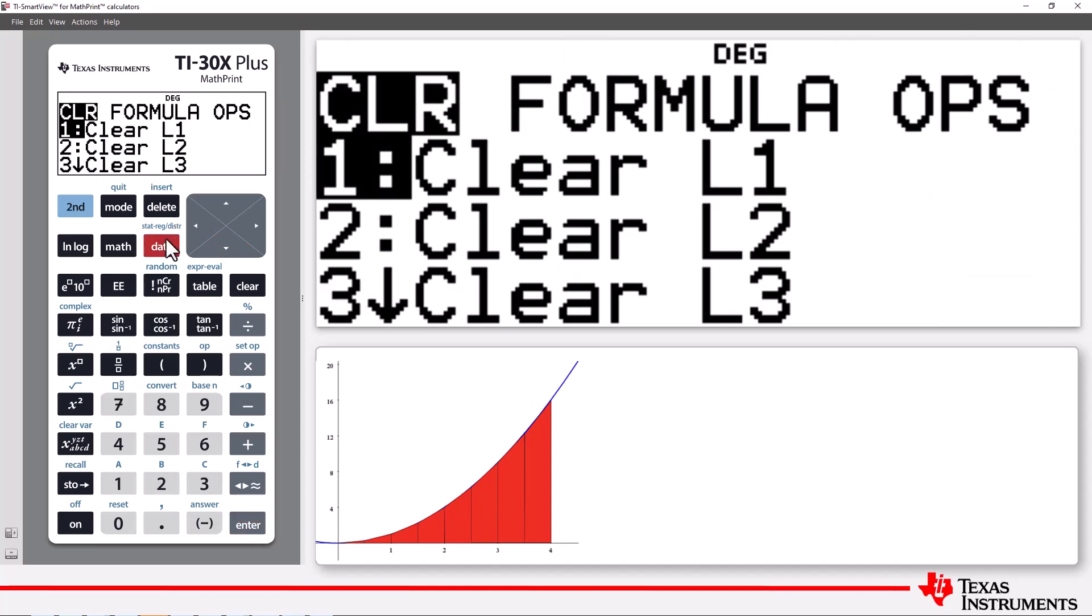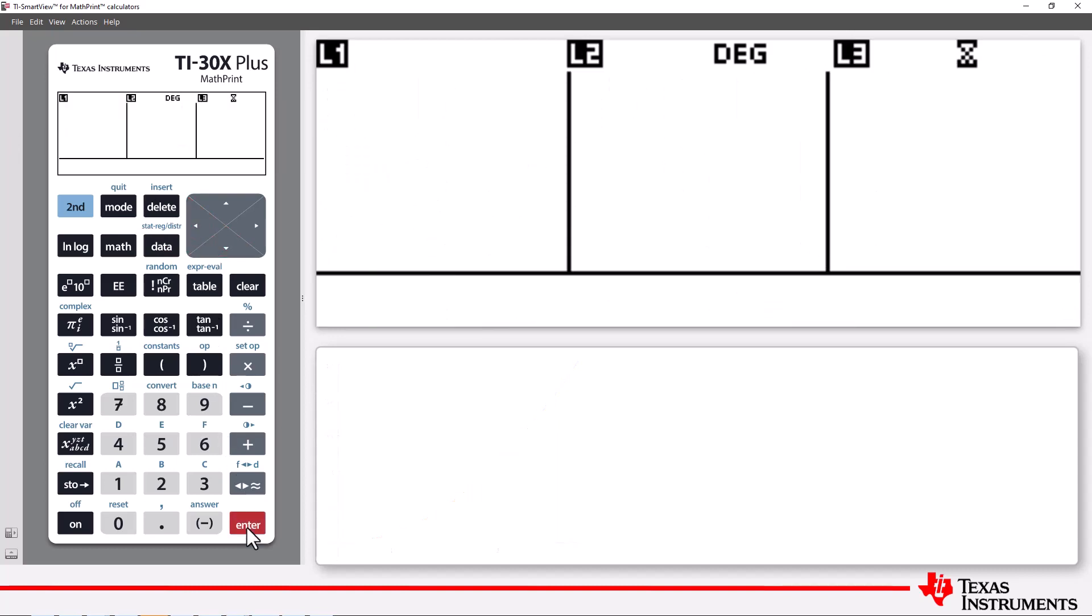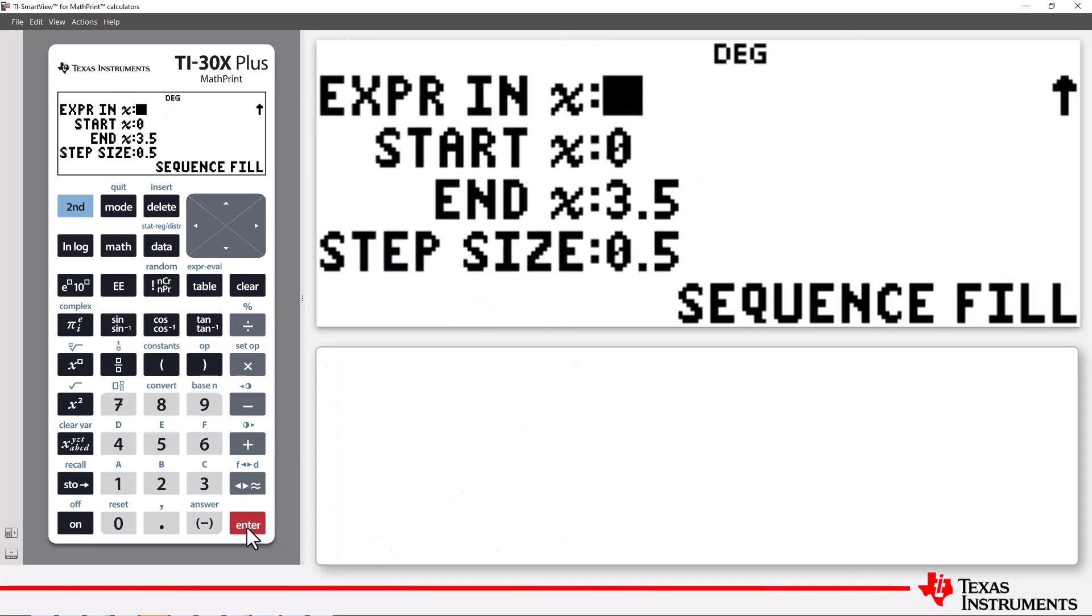Let's go one more time. I'll use a column width of 0.1, a total of 40 columns.